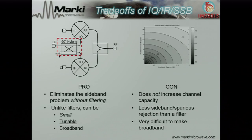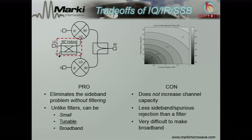The next two cons are related. It doesn't give you as much sideband or spurious rejection as a filter would — you can only get around 20 to 30 dB, limited by common mode rejection. If you're very good, you can be within one degree to five degrees of phase and one dB of amplitude balance, meaning 20 to 30 dB of rejection across a broad bandwidth. Or you can go into a very narrow bandwidth and get excellent rejection. The whole thing depends on maintaining amplitude and phase balance throughout the entire mixer.